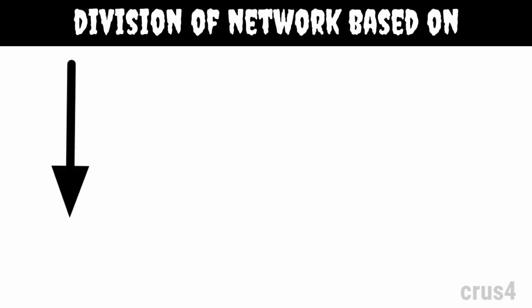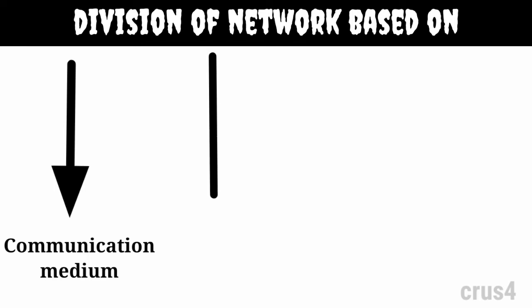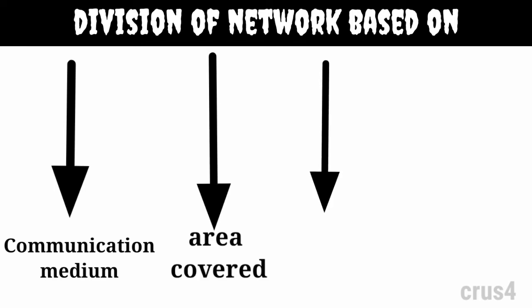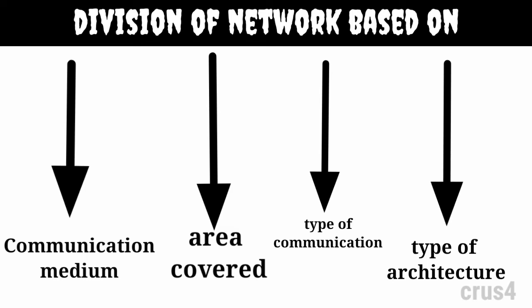Now let's move on to the types of network. A network can be divided based on four factors: division based on communication medium, division based on area covered, division based on types of communication, and division based on type of architecture.